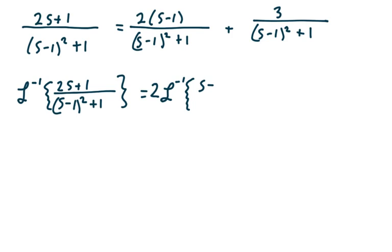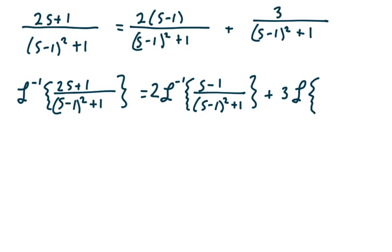So the inverse Laplace transform splits into 2 times the inverse Laplace transform of (s minus 1) over (s minus 1) squared plus 1, plus 3 times the inverse Laplace transform of 1 over (s minus 1) squared plus 1.